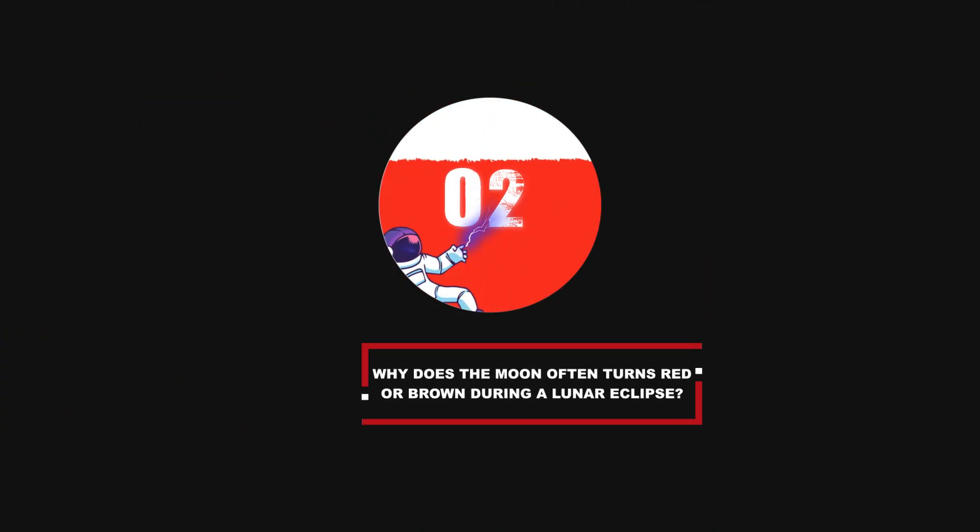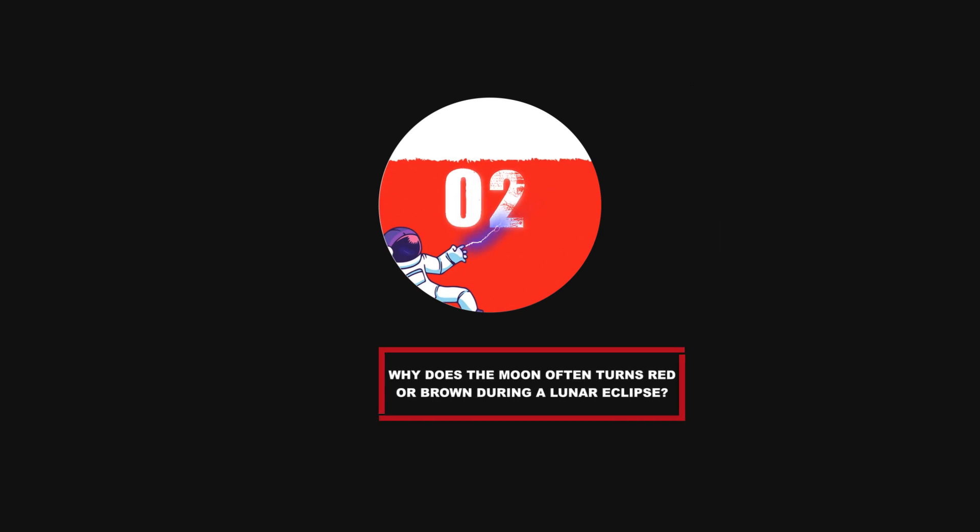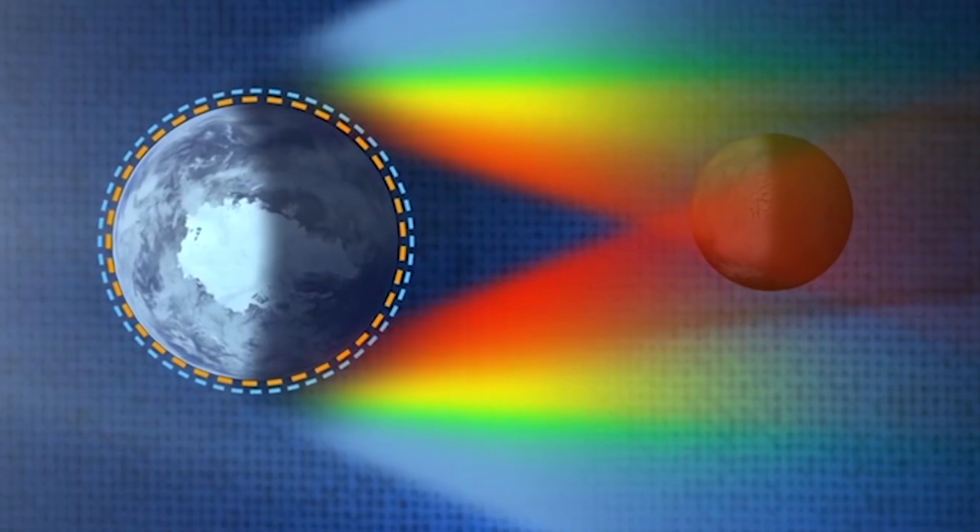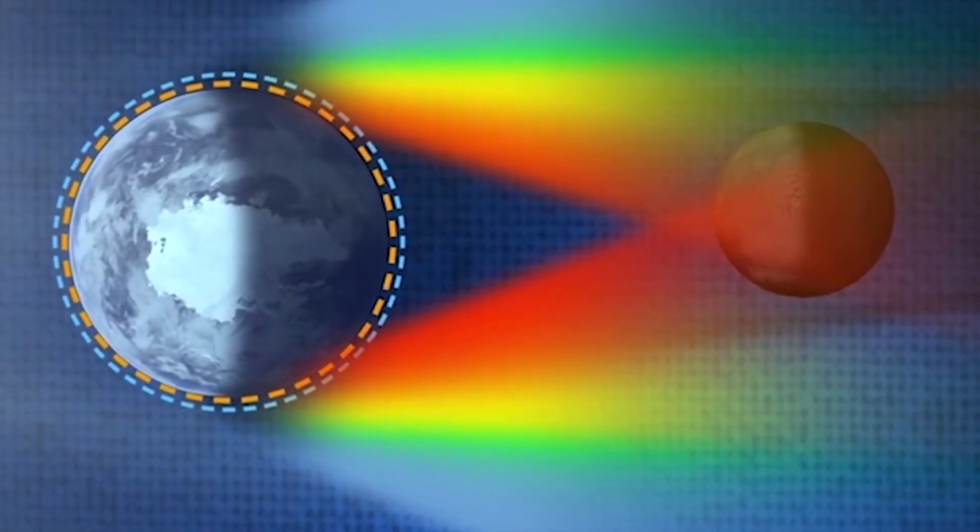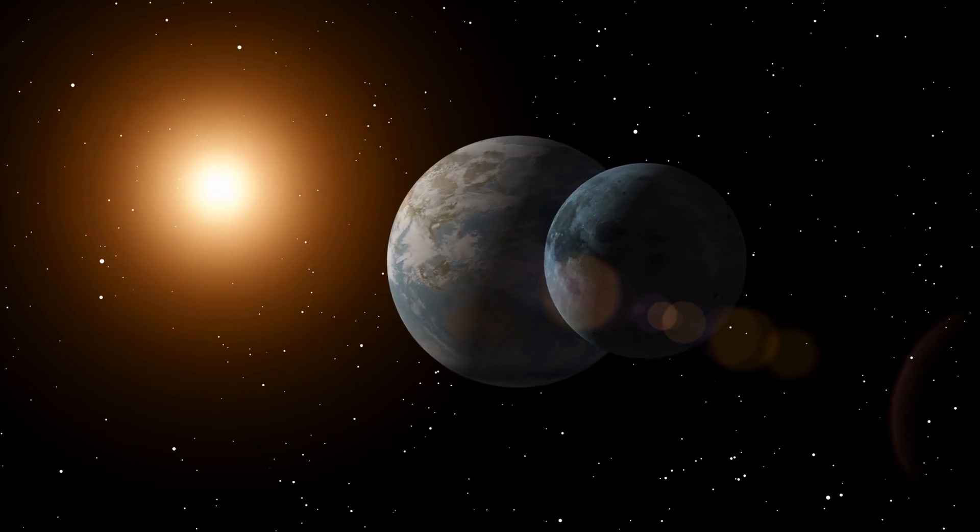Number 2: Why does the Moon often turn red or brown during a lunar eclipse? Turns out, the color comes from the Earth's atmosphere. During a lunar eclipse, where the Earth passes between the Moon and the Sun, the only sunlight that reaches the Moon is the stuff that passes through the Earth's atmosphere.